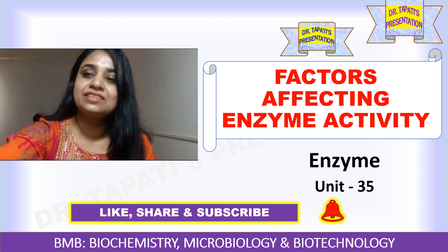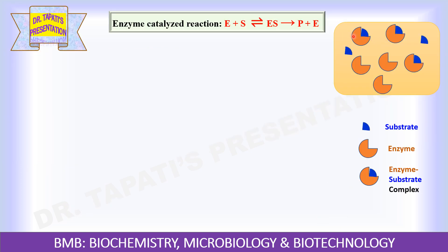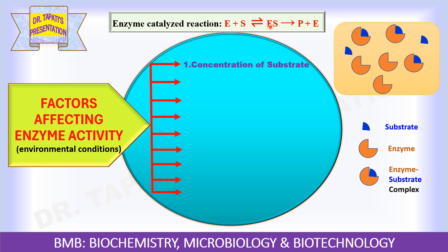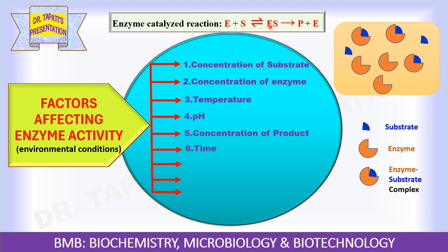Let's start the presentation. As you already know, contact between enzyme and substrate is the most essential prerequisite for enzyme activity, because enzyme-substrate complex formation is necessary for the action of enzyme during the conversion of substrate to product. ES complex formation is essential during the enzyme-catalyzed reaction. Enzyme activity and the rate of an enzyme-catalytic reaction is partly regulated by certain environmental conditions, including concentration of substrate, concentration of enzyme, temperature, pH, product concentration, time, presence of activators, cofactors and coenzymes, presence of inhibitors, and light and radiation.